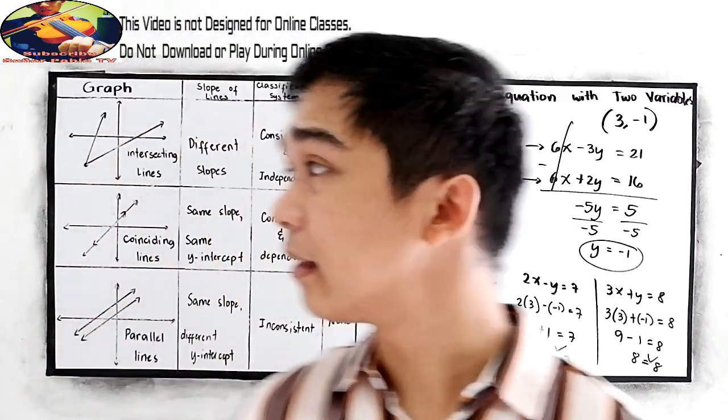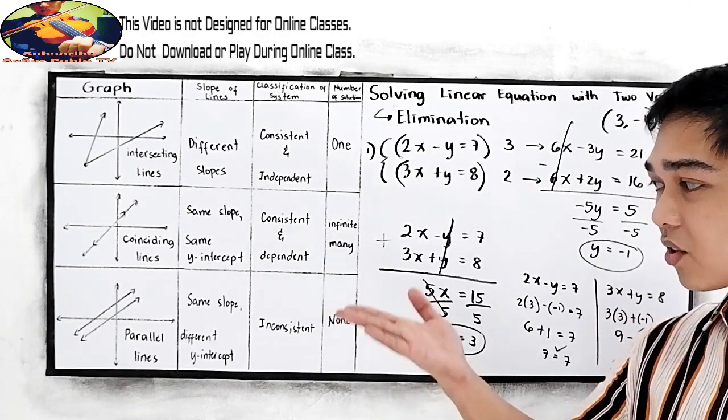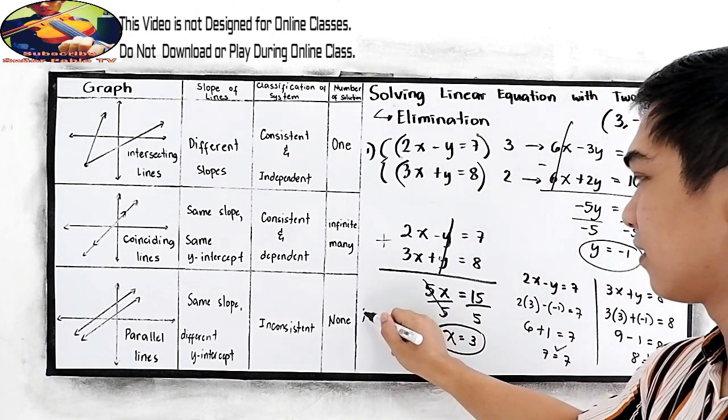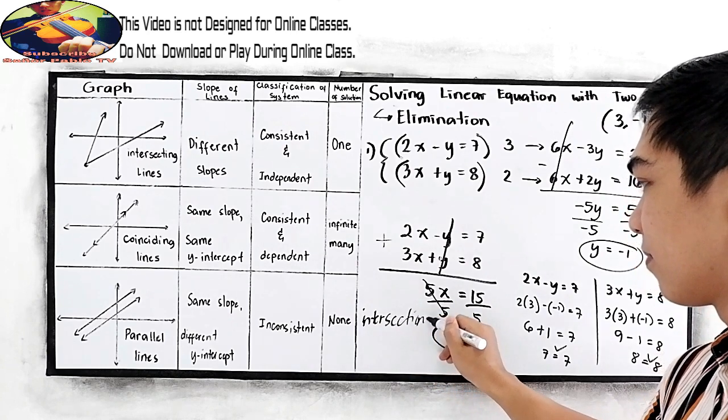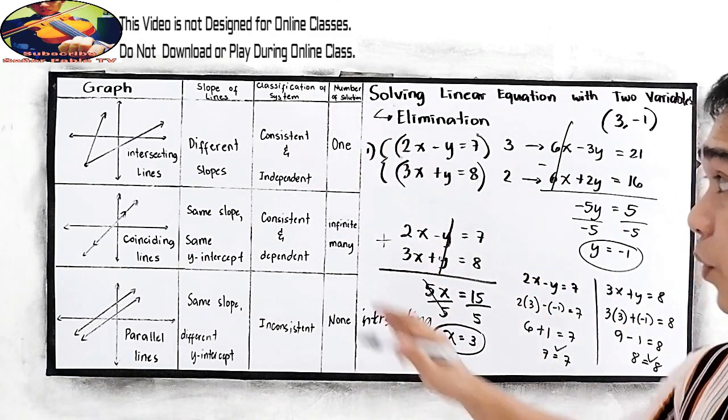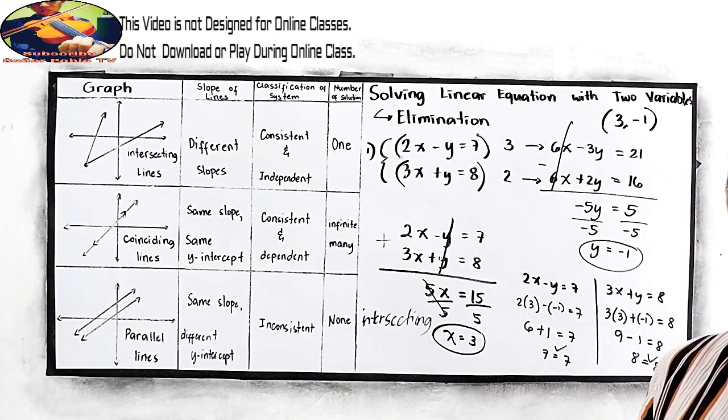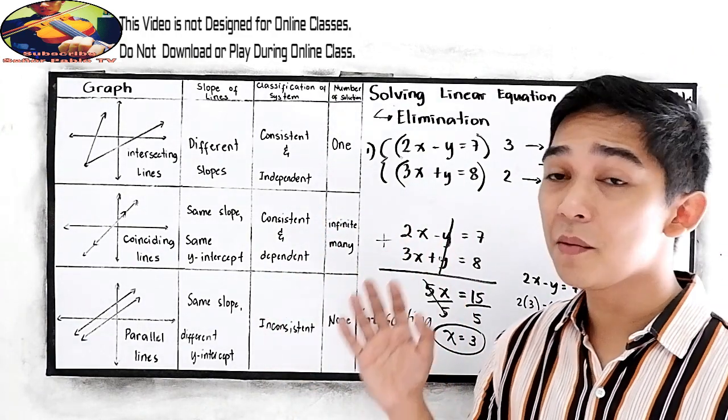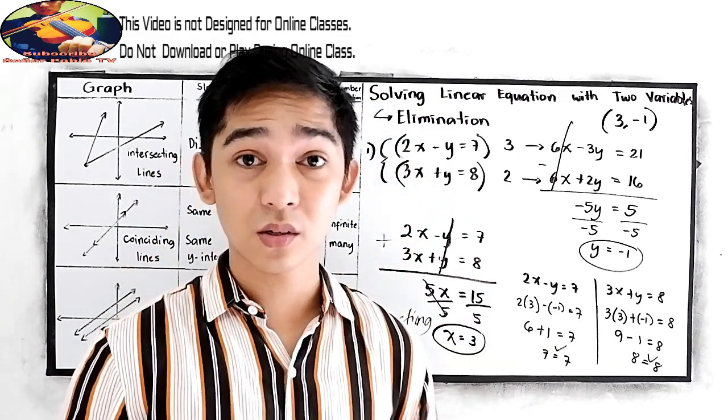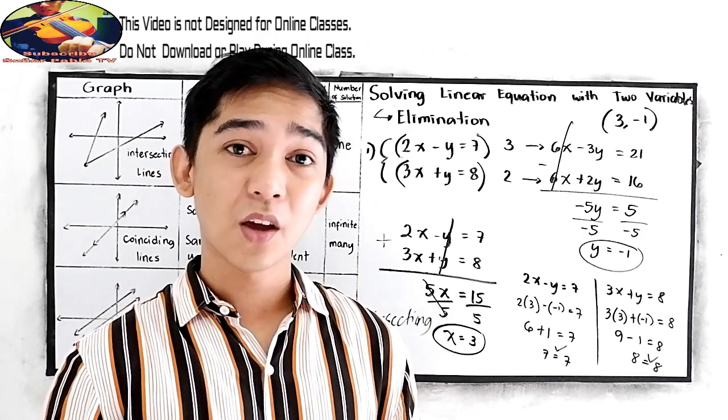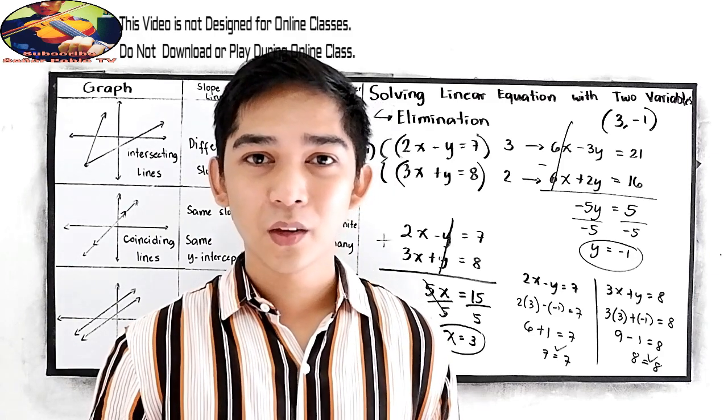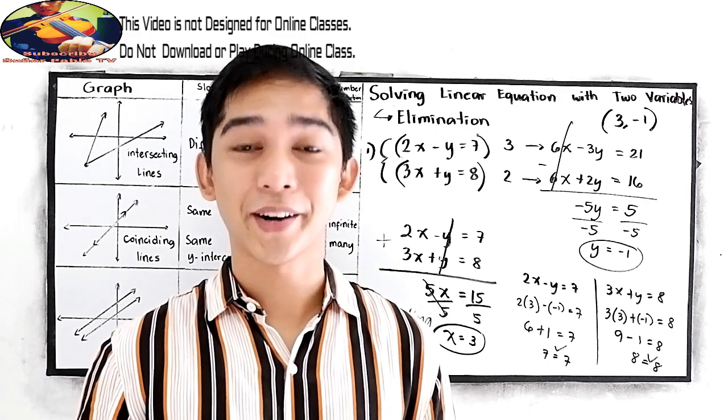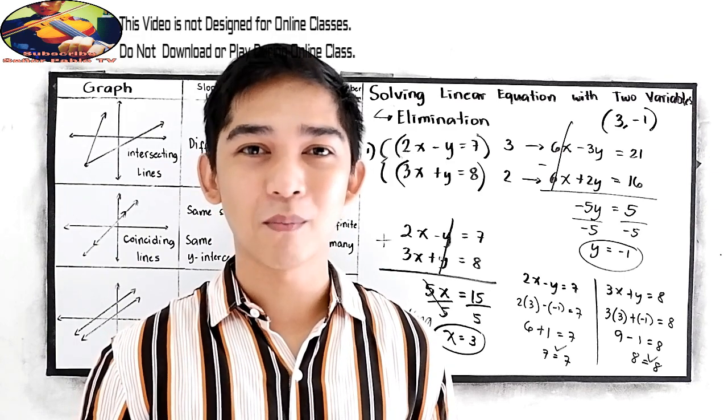Now if the question asks you to determine the graph, is it intersecting, coinciding, or parallel? So since we have one solution, so it is intersecting, and the classification of systems we have the consistent and independent, and the number of solutions, you have one or the unique solution. The shortcut here in elimination method is that you're going to manipulate our equations so that our coefficient will be the same, then you need to cancel that out. For our next video, we will combine the elimination and the substitution method. How to do that? Watch our next video. See you and thank you for watching Senior Pablo TV.